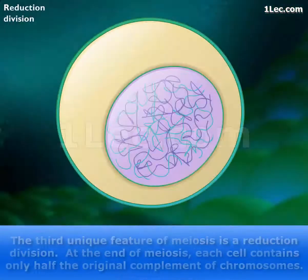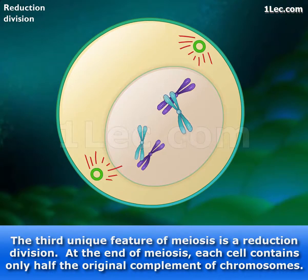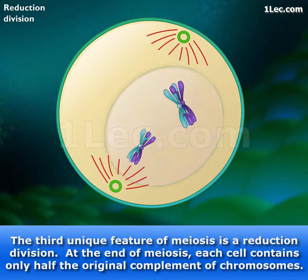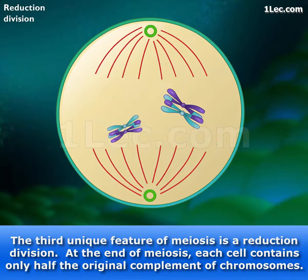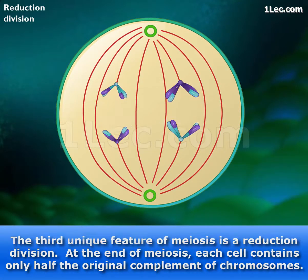The third unique feature of meiosis is a reduction division. At the end of meiosis, each cell contains only half the original complement of chromosomes.